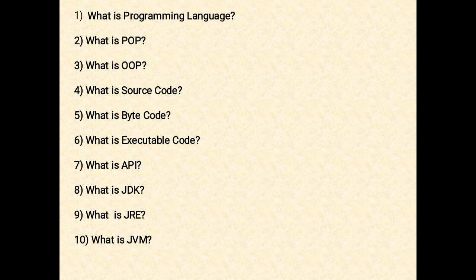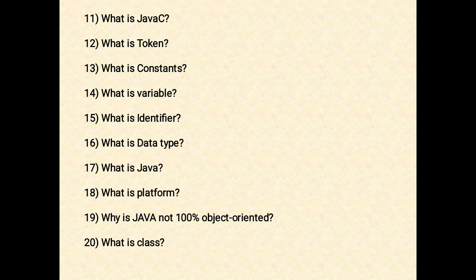The next question: what is JVM? JVM means Java Virtual Machine. It is a platform-independent execution environment that converts Java bytecode into machine code for execution. The next question: what is JavaC? JavaC means Java Compiler, which converts Java source files (dot java files) into bytecode (dot class files).